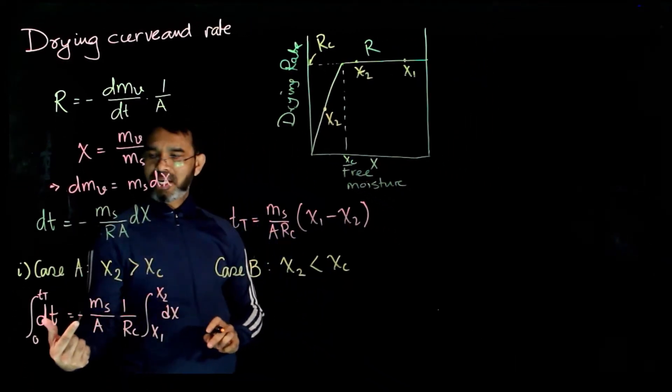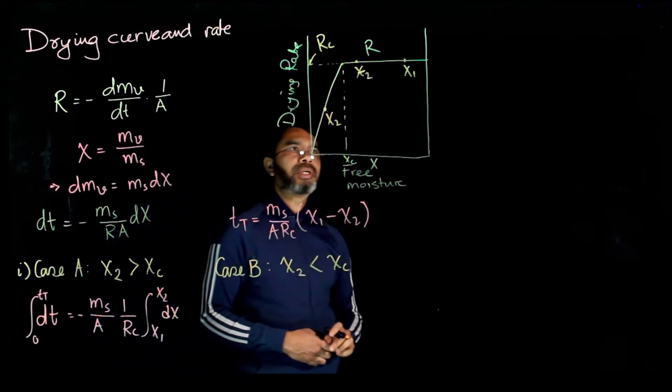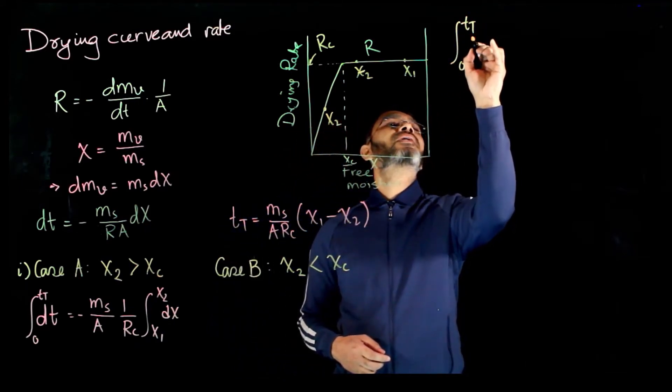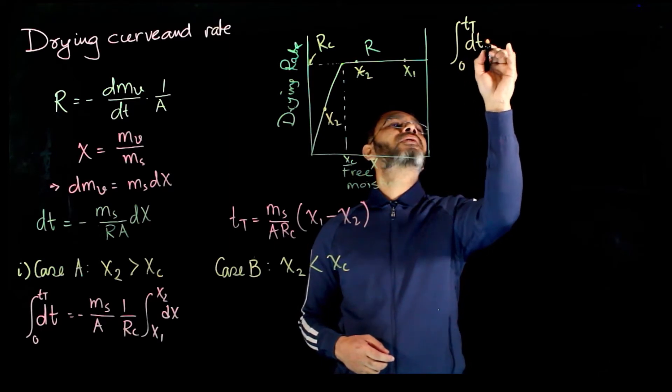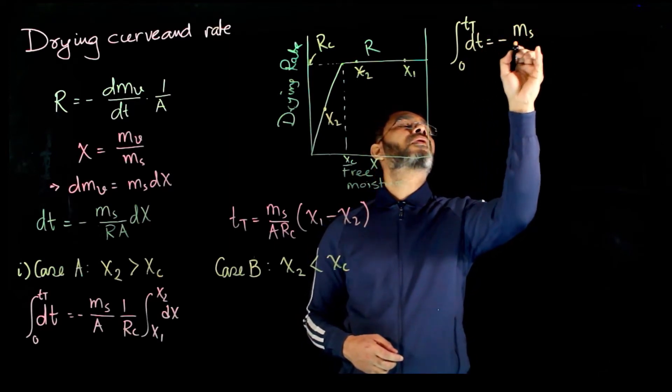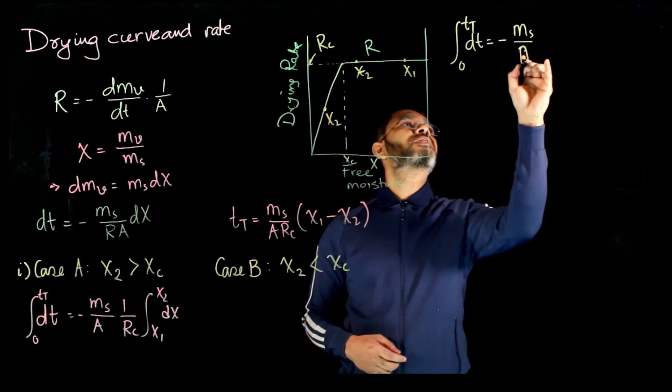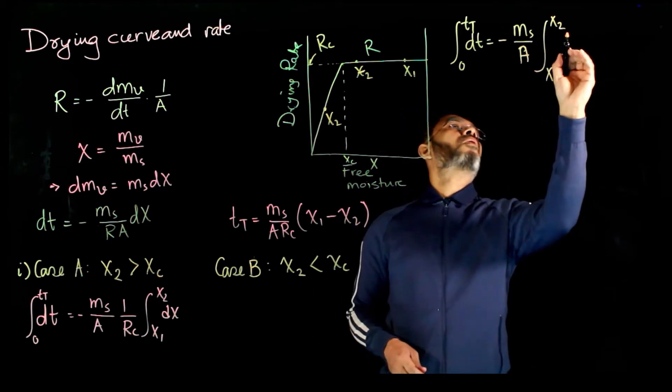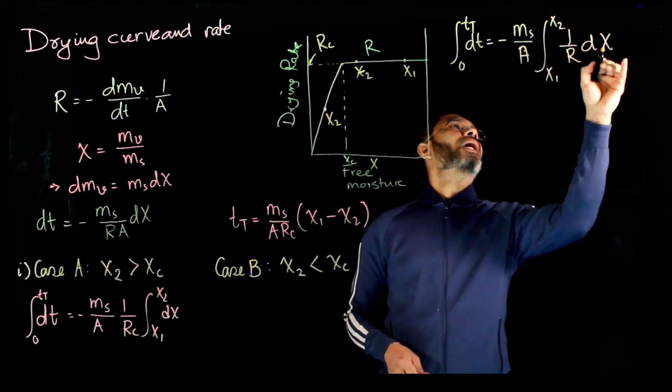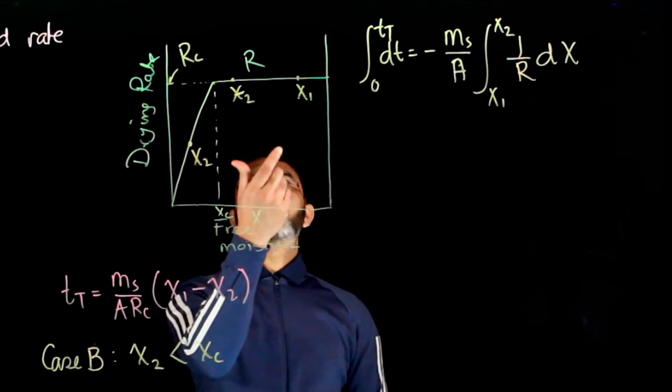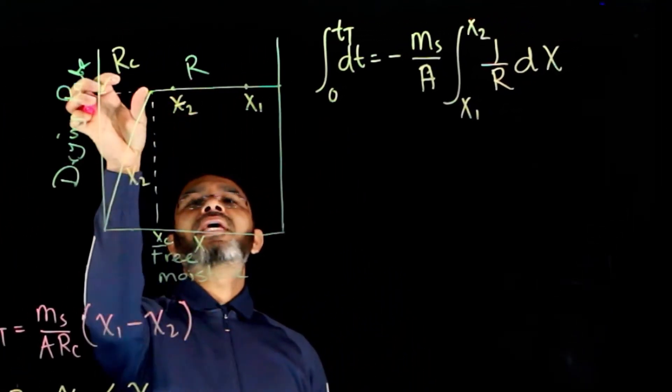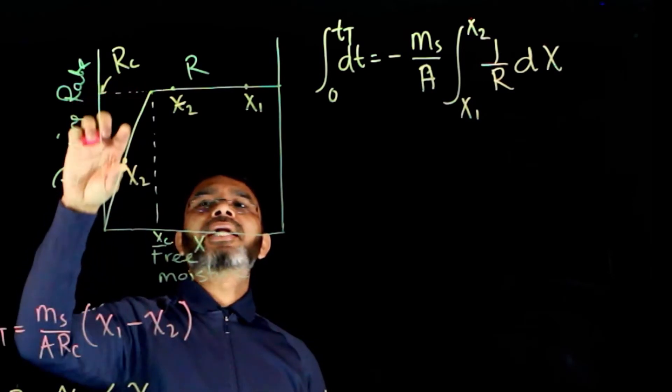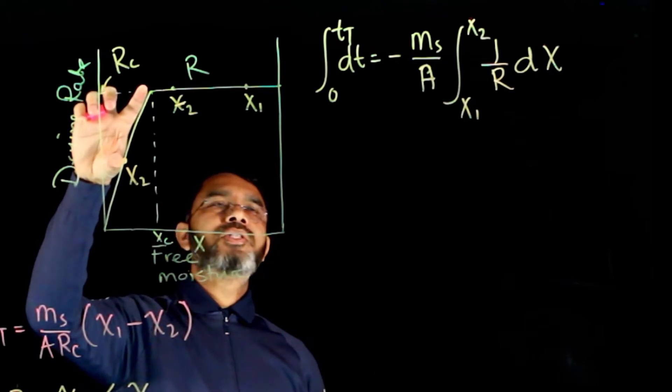You'll have to integrate between 0 to dt dt, ms over a x1 to x2 1 over r dx. Now, for this case, you see here, r between x1 and xc, r is constant and rc, but between xc and x2, r is not constant, the r is changing.